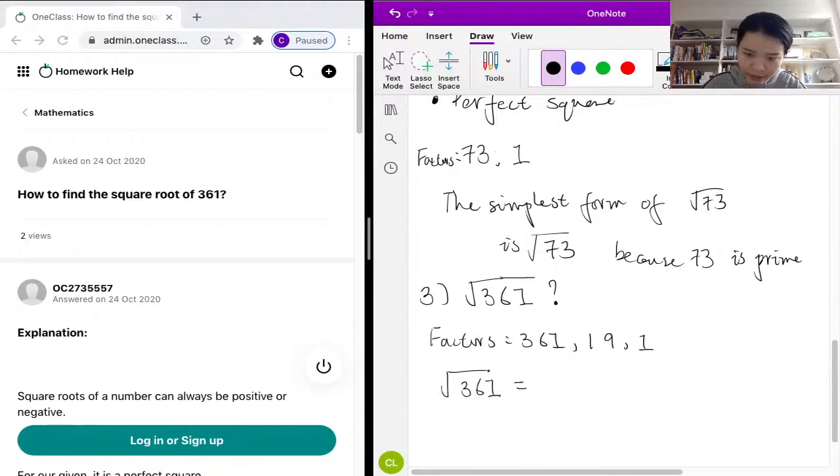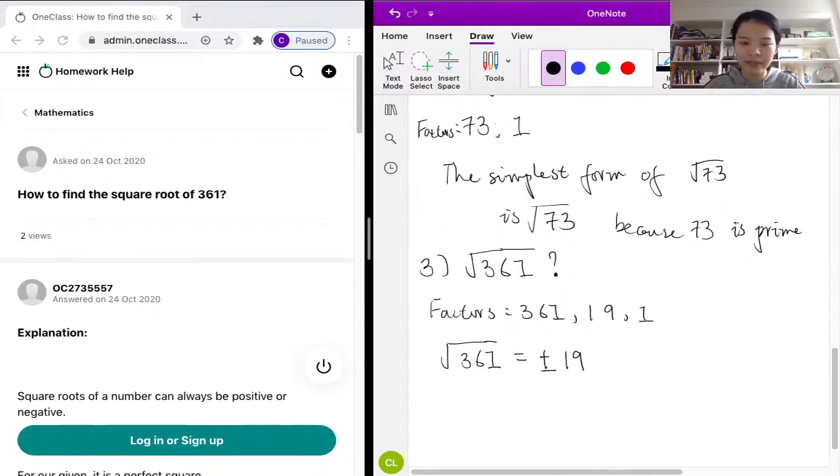Because positive 19 times positive 19 is 361 and negative 19 times negative 19 is 361. So we know the square root of 361 is positive 19 or negative 19. So it's ±19, and that's the square root of 361.